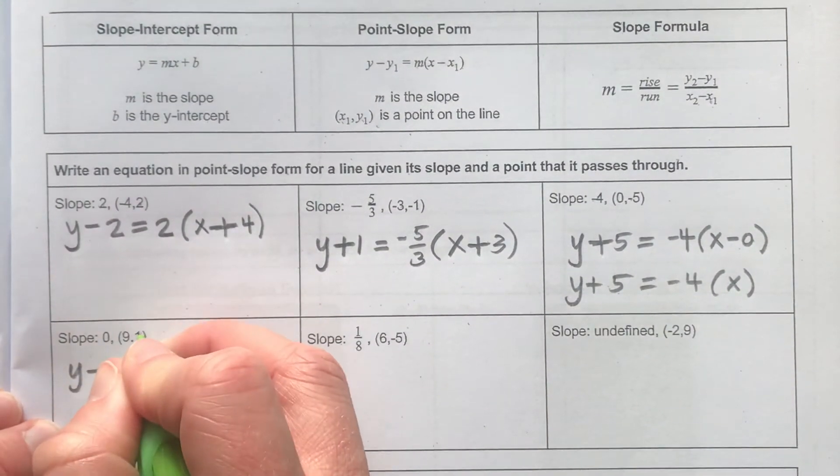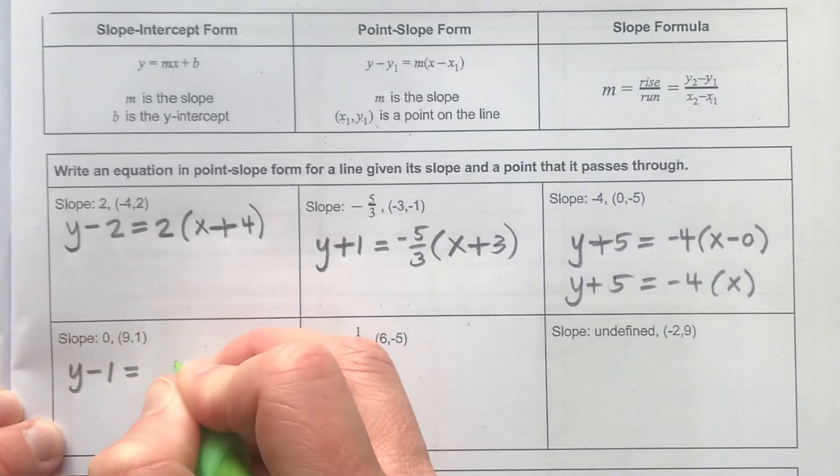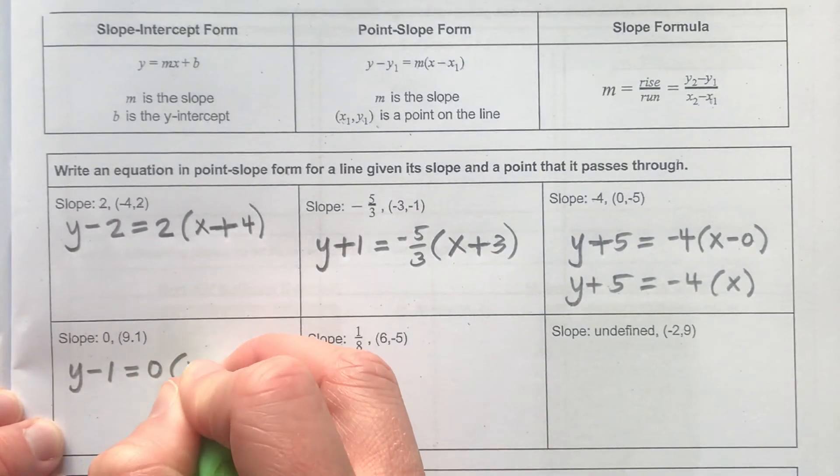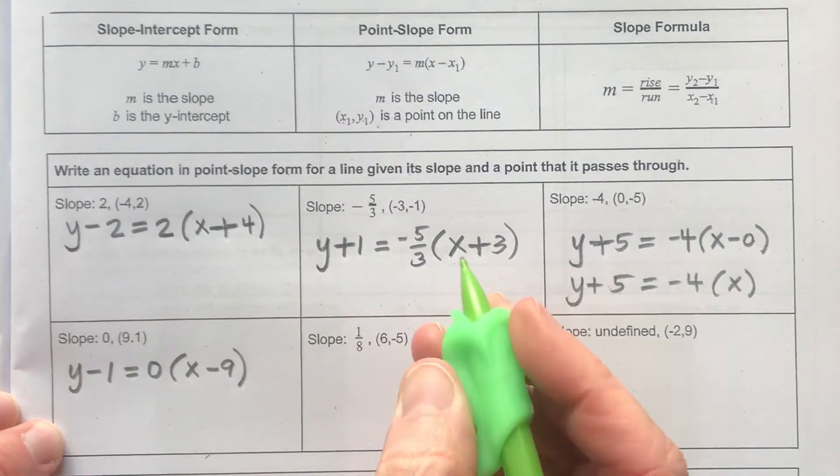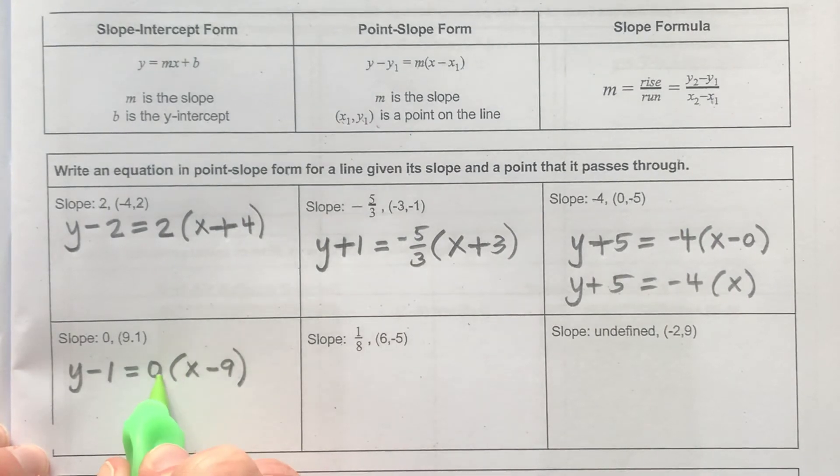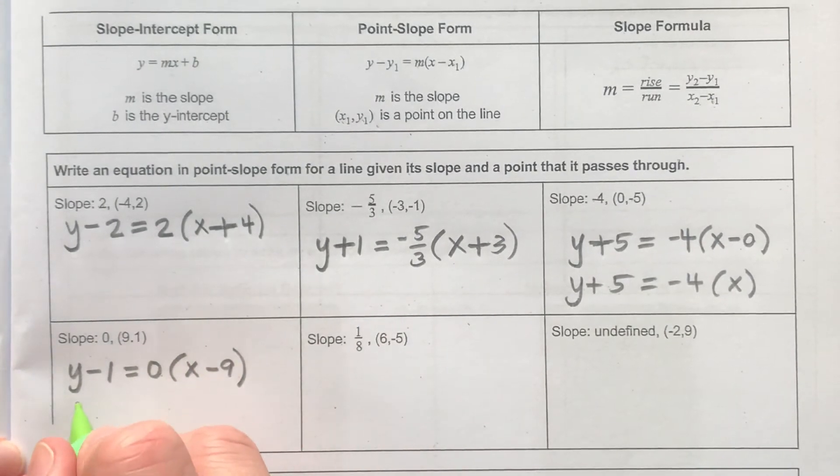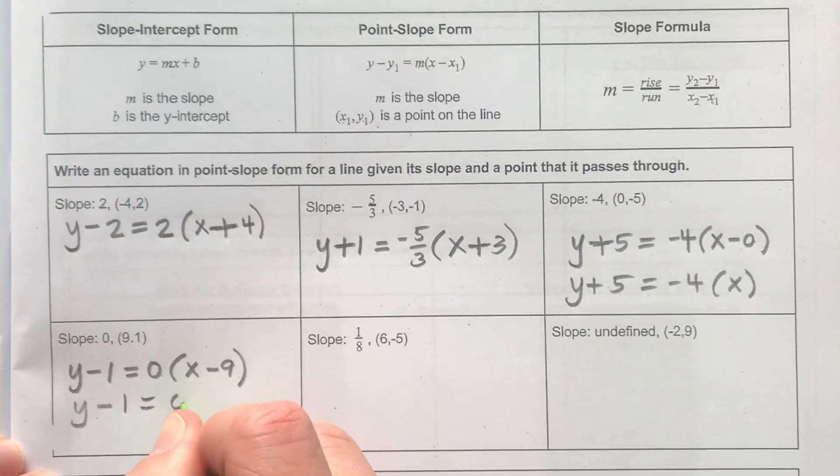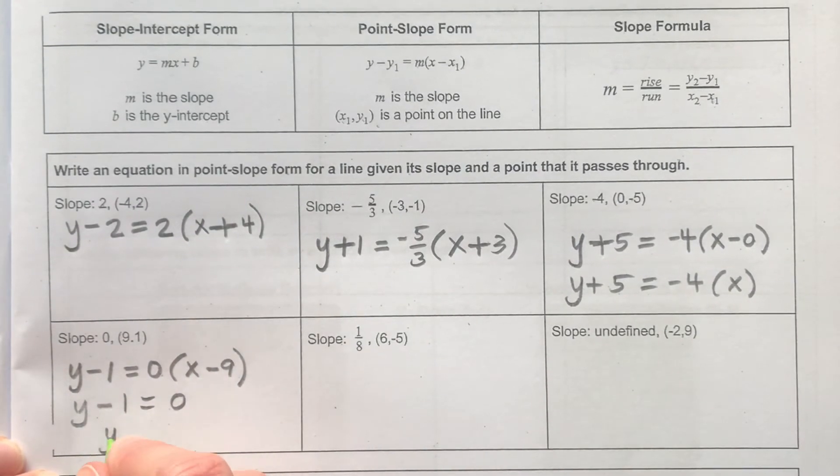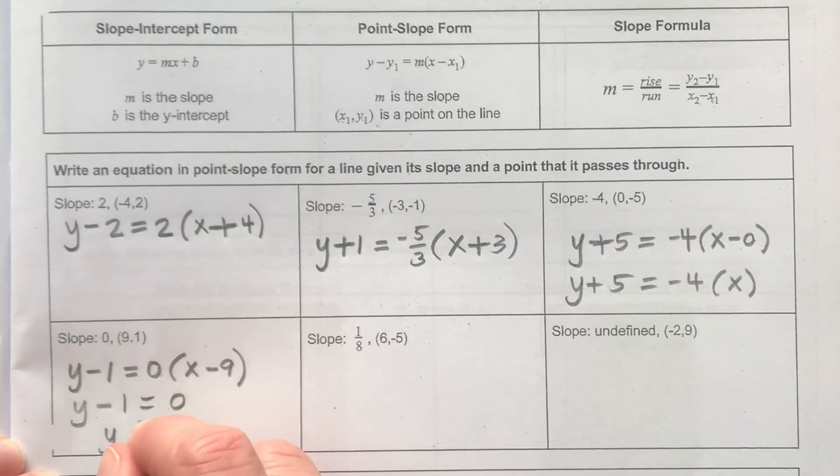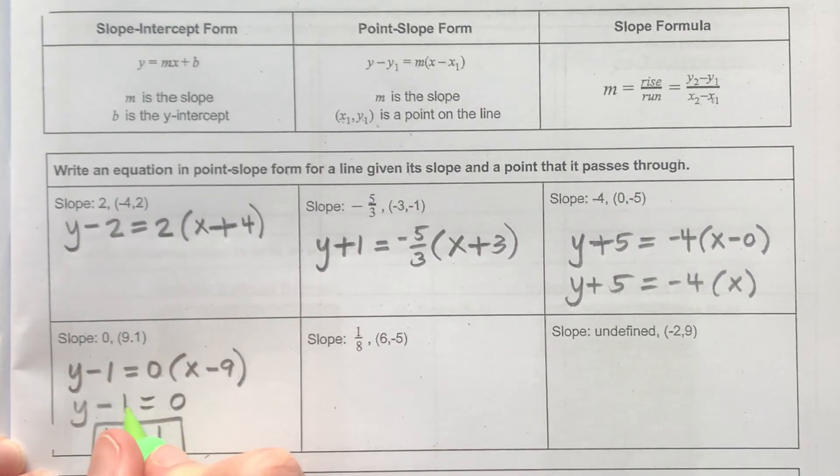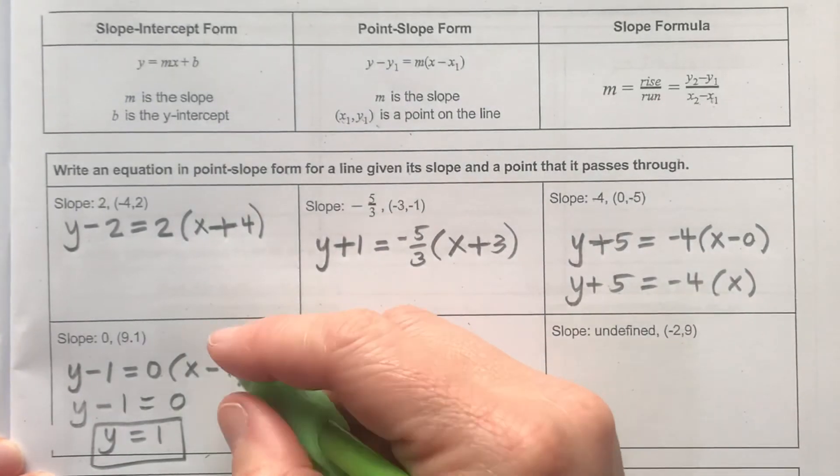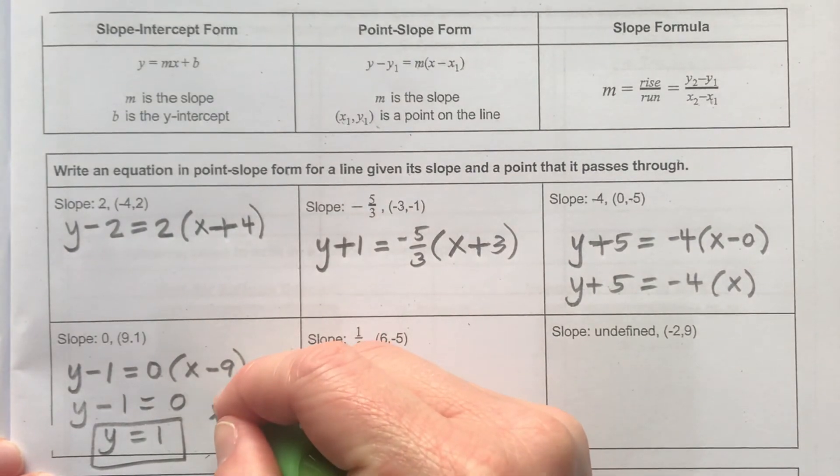So y minus a y value of 1 is equal to a slope of 0, and then x minus 9. And because our slope is 0 here, this formula is going to change a little bit. 0 times anything is just 0, and then the most simplified version of this would be y is equal to 1, if I add that 1 over to this side. So this one is actually a horizontal line.